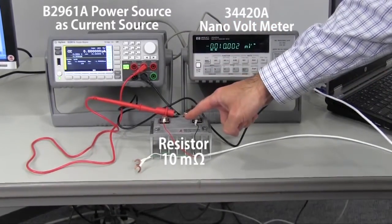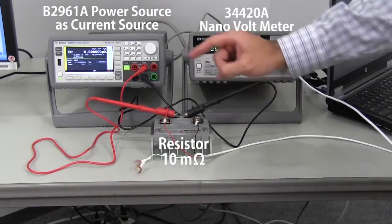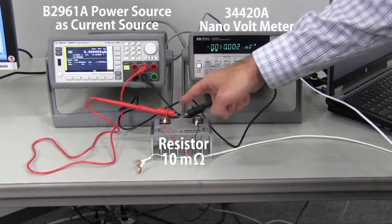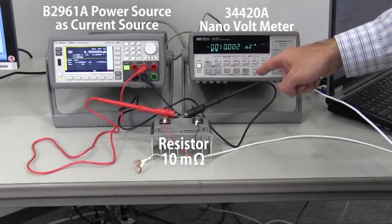This is the 10 milliohm resistor. Connect the current source to these terminals and the nanovolt meter to these terminals.